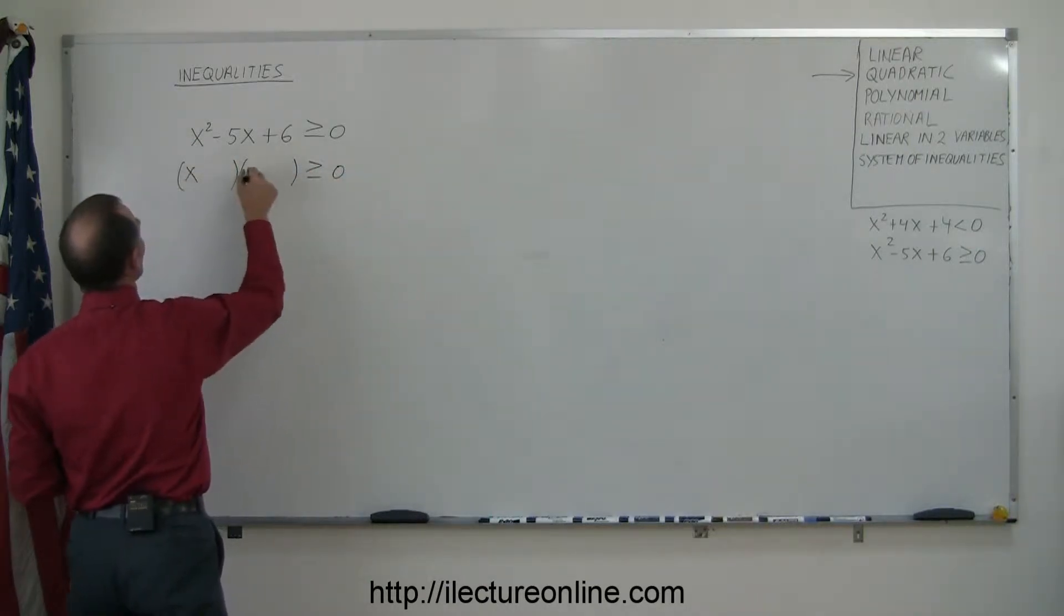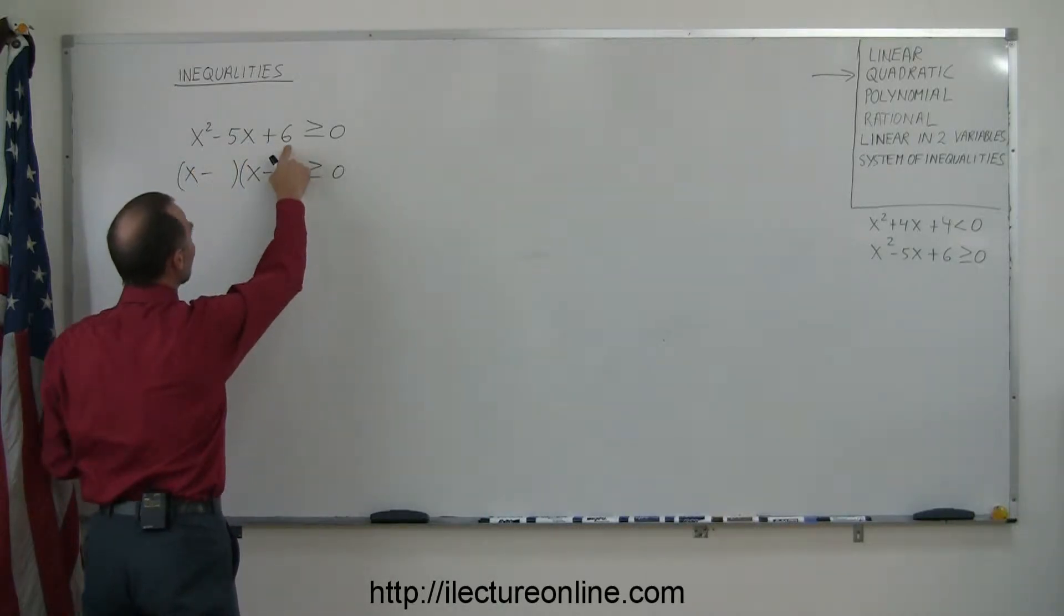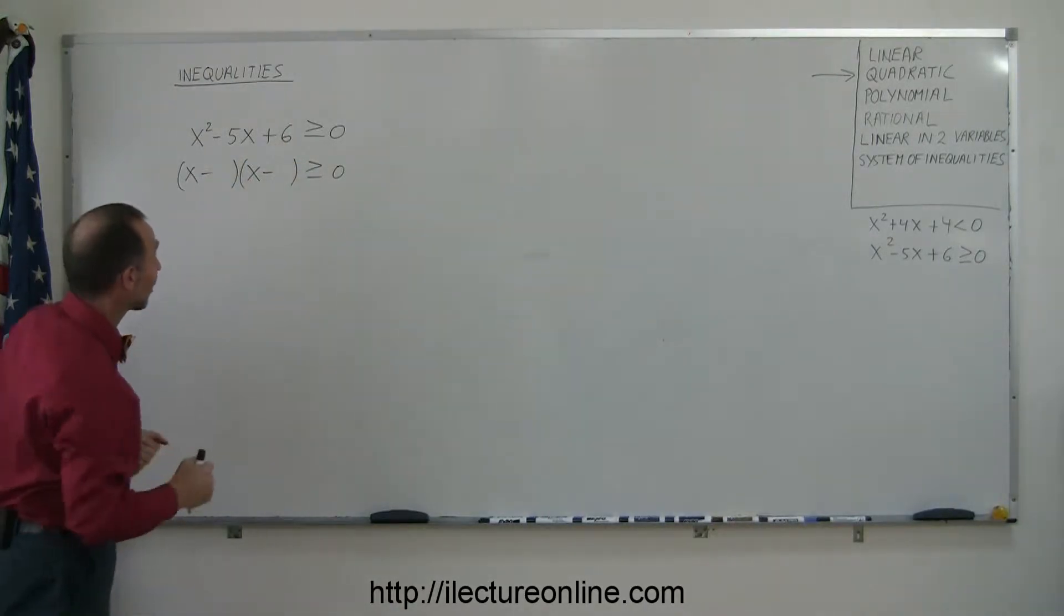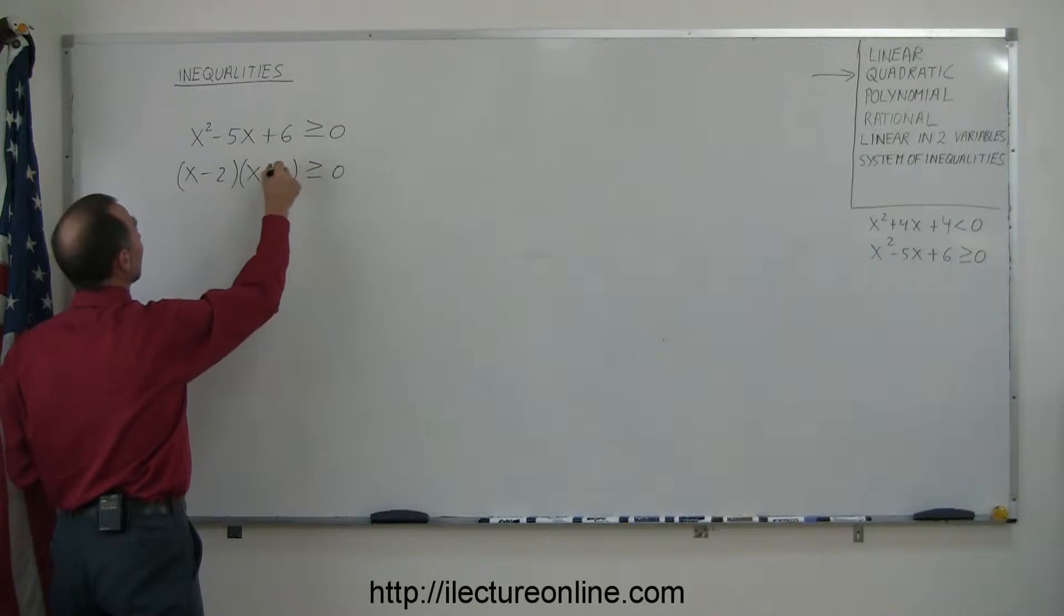We need an x and an x. If this number is positive and this number is negative, that means they both have to be negative, because when I multiply we'll get a positive 6, when I add I'll get a negative 5. And the obvious answers in this case is a negative 2 and a negative 3.